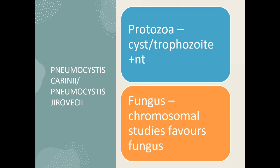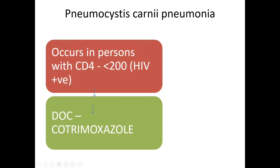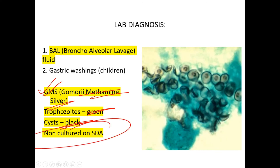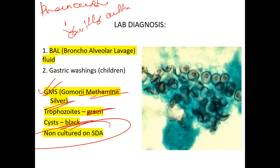Pneumocystis carinii (or Pneumocystis jirovecii) — chromosomal studies favor it being a fungus. Pneumocystis pneumonia occurs in HIV-positive patients with CD4 count less than 200. Drug of choice is cotrimoxazole. In lab diagnosis, Gomori methenamine silver (GMS) stain is used: trophozoites appear green and cysts appear black. Importantly, Pneumocystis cannot be cultured on SDA.